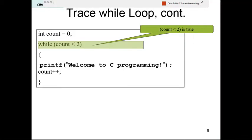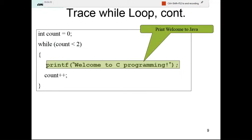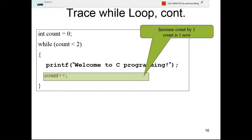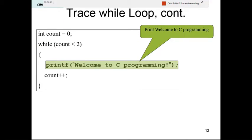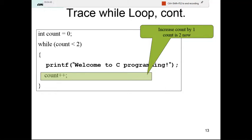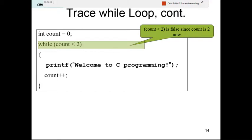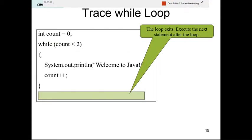While count is less than 2 — true — so we print "Welcome to C programming" and update count: count is now 1. Check again: count equals 1, which is less than 2, so true — print again and increment. Now count equals 2, which is not less than 2, so the condition is false. The loop terminates and we exit.